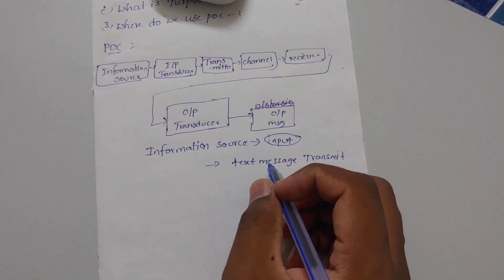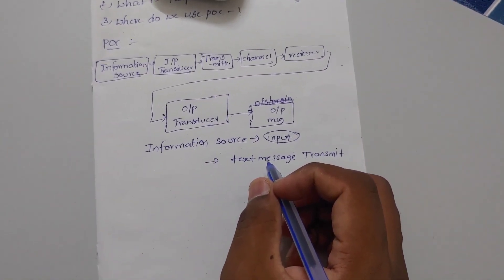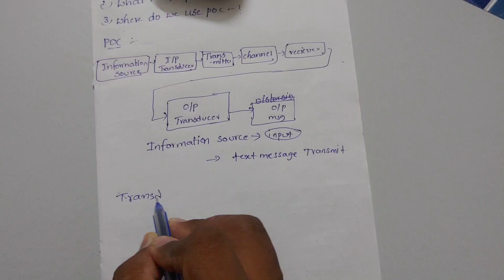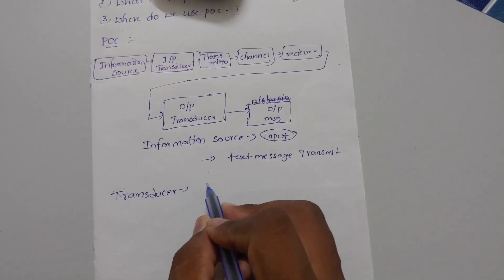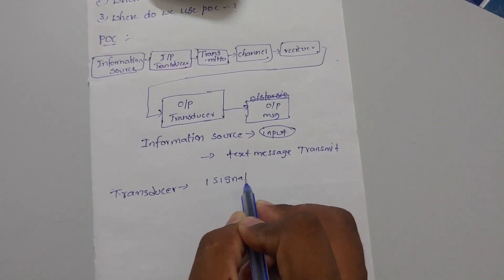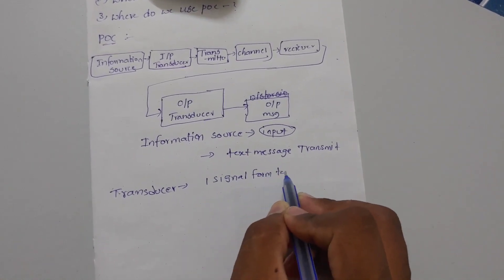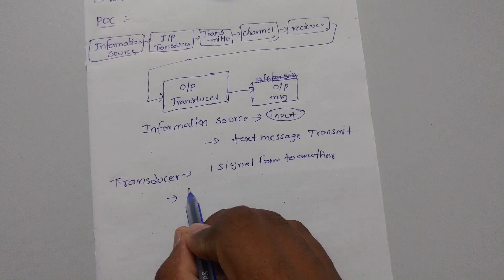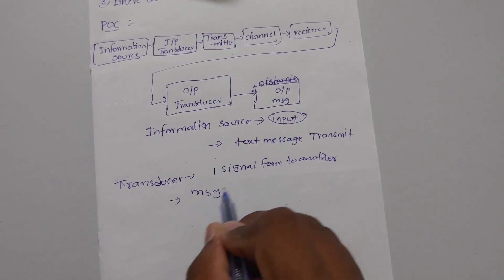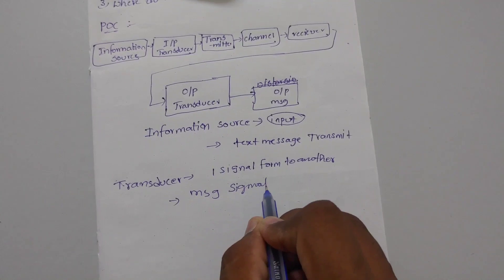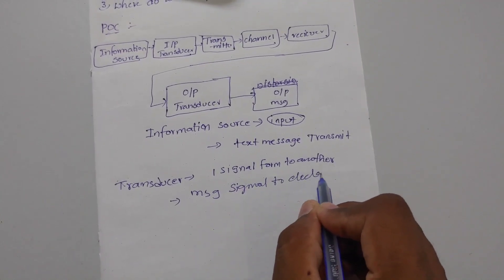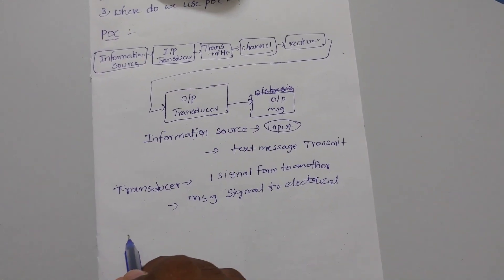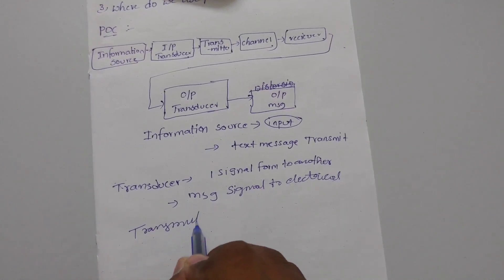There are two types: input transducer and output transducer. Transducer converts the signal from one form of energy to another form. Suppose the message signal - it will generate an electrical signal from the text message. Input transducer working - first the message signal as input, electrical signal as output. Output transducer - electrical signal output converts to message signal.